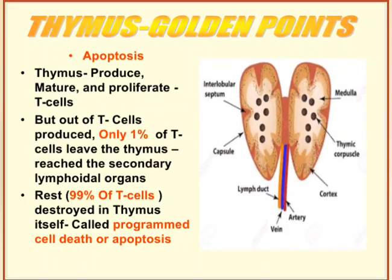The remaining 99% of T-cells — those that did not get the best training — are killed by the thymus itself. That process is termed programmed cell death, otherwise called apoptosis. In such a way, the thymus and T-cells protect our body to the best possible extent.